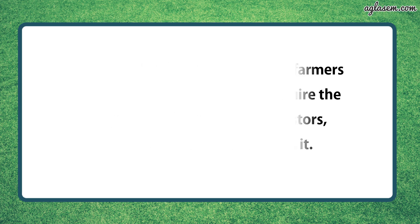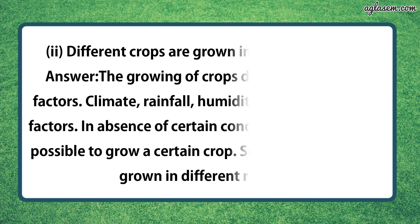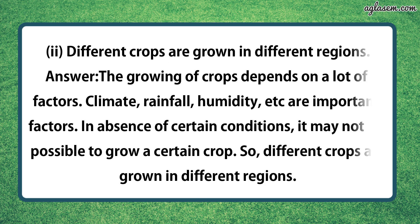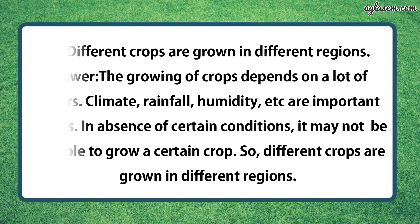Second part says, different crops are grown in different regions. So the answer is, the growing of crops depends on a lot of factors like climate, rainfall, humidity, etc. which are important factors. In the absence of certain conditions, it may not be possible to grow a certain crop. So different crops are grown in different regions.